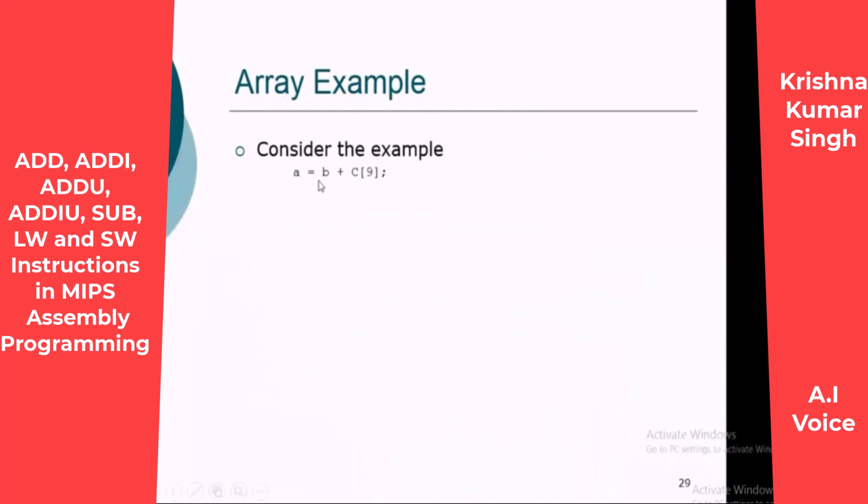Then I'll explain one example about arrays. For example, we mentioned how we can convert this statement from C language into MIPS. The value of variable a will be equal to the content of variable b plus c[9]. As you know, arrays will be stored in consecutive memory locations and the start address of the array will be stored in the variable name.